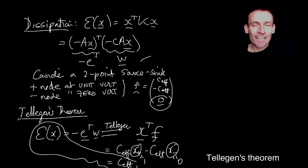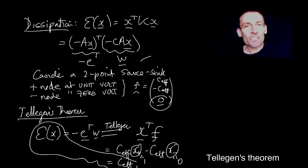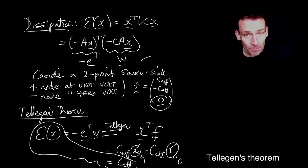So look what I've just derived for you. Isn't it amazing? The effective conductance of a two point plus minus source sink current, the effective conductance is precisely equal to the dissipation in the circuit. Isn't it amazing? It follows as an almost trivial consequence of Tellegen's theorem here. So the effective conductance is indeed another way to work out dissipation at minimum.